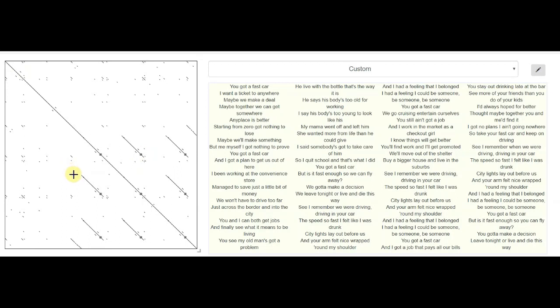When a sequence of words is repeated, it creates a diagonal line off the main diagonal. For this song, the mini-diagonals created off the main diagonal comes from the chorus of the song, beginning with the phrase, See, I remember we were driving.